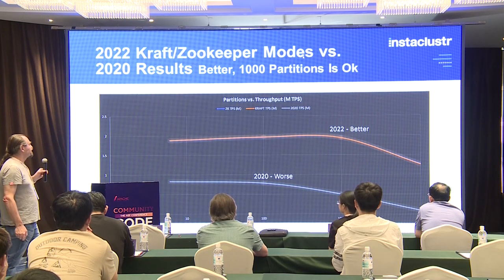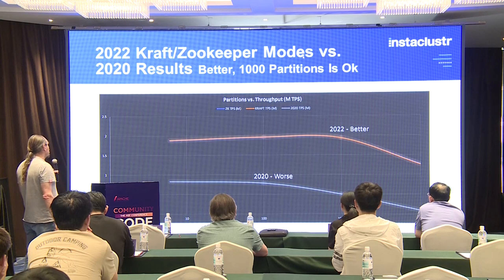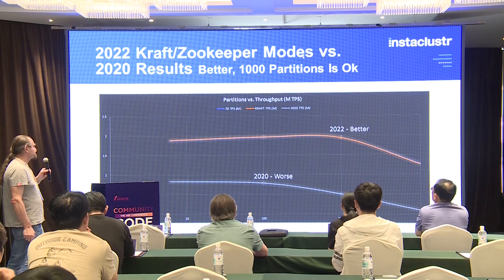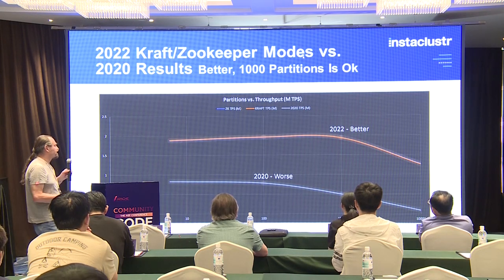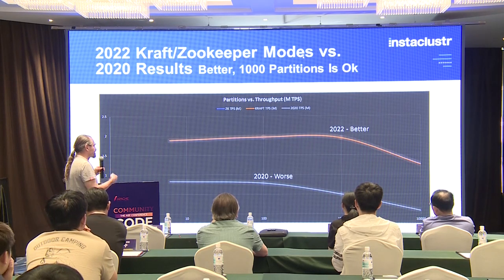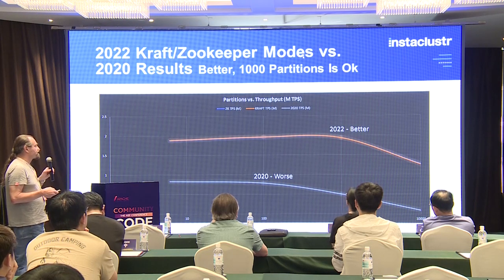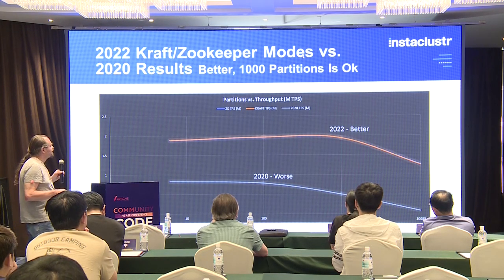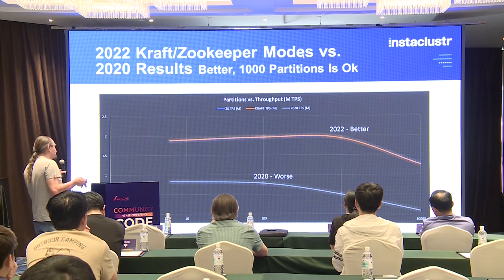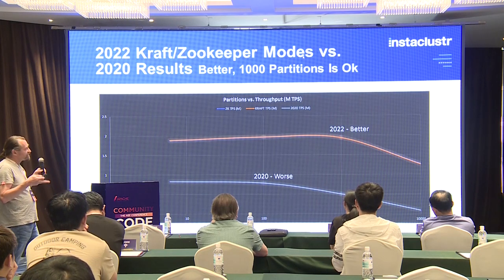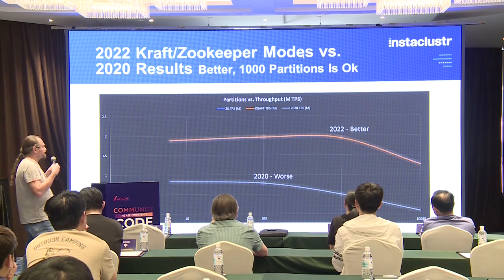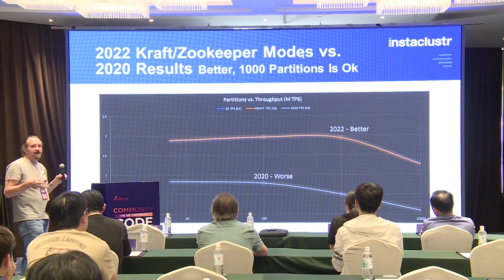Last year we redid that benchmarking using the new version of Kafka with KRAFT, which replaces ZooKeeper mode. The results overall were a lot better than the 2020 results. The latest version of Kafka will support at least 1,000 partitions without much reduction on a fairly small Kafka cluster. Interestingly, the throughput of ZooKeeper mode and the new KRAFT mode are identical for the data workload — KRAFT doesn't improve data throughput, but it does improve some of the metadata operations.